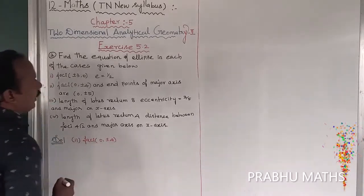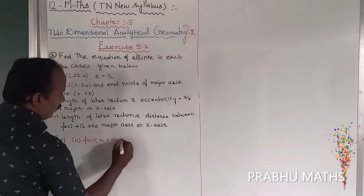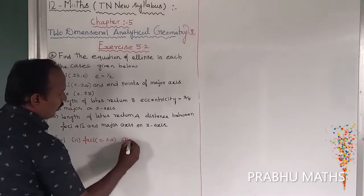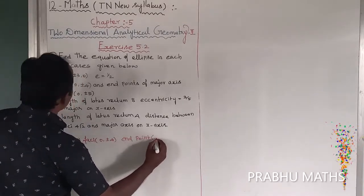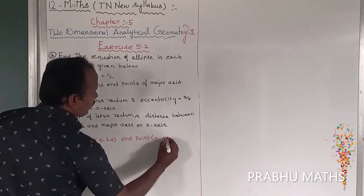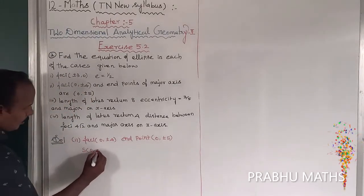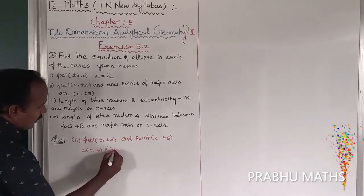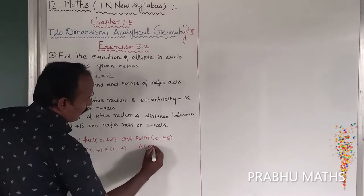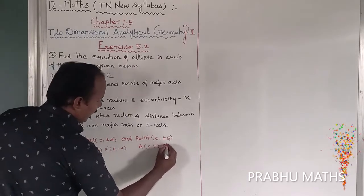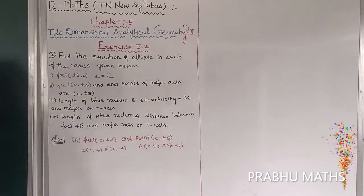And then the end points of the major axis — so the major axis end points, that is called vertex. So: S(0, 4), S'(0, -4), A(0, 5), A'(0, -5). That is the given information.